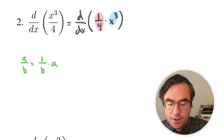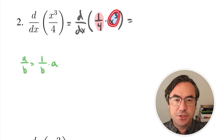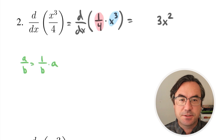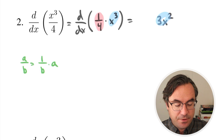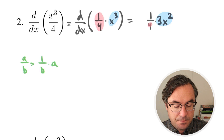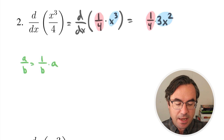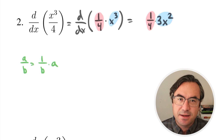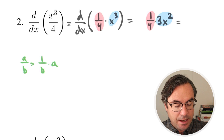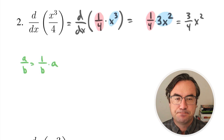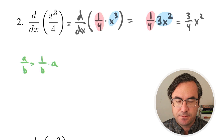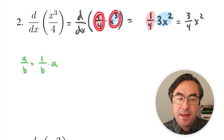Once we get to here, we apply the constant multiple rule. We can first focus on differentiating x³. Bringing down the 3, keeping x the same, and subtracting one in the exponent gives us 3x². That's the derivative of the variable part, and then the constant one-fourth just sticks around in front. We multiply: 3 times one-fourth gives us three-fourths. So we end up with (3/4)x².